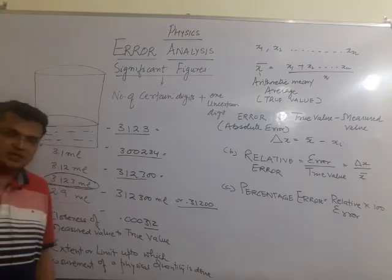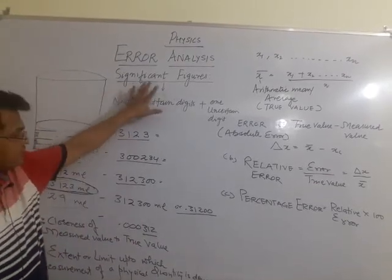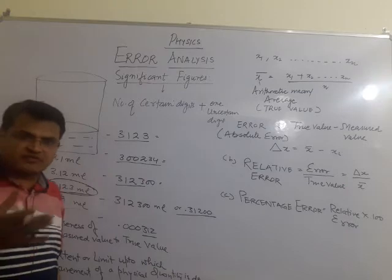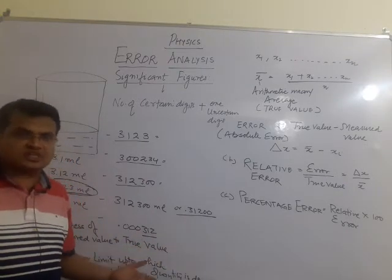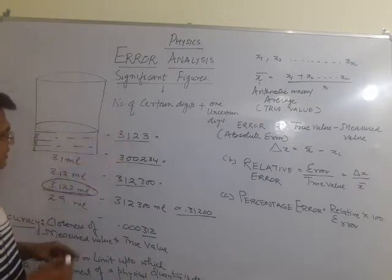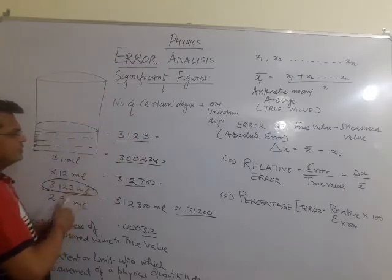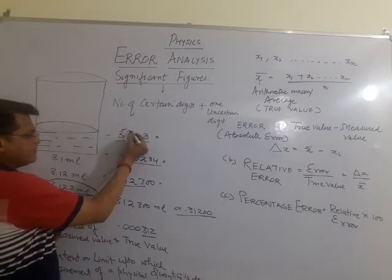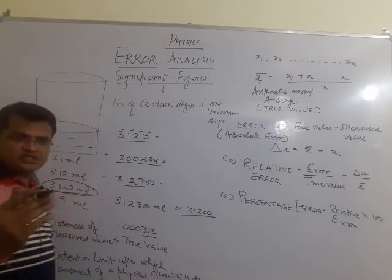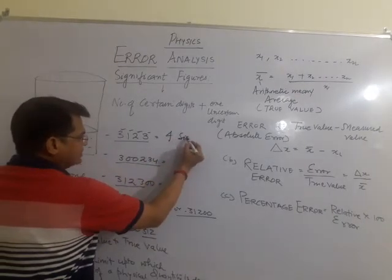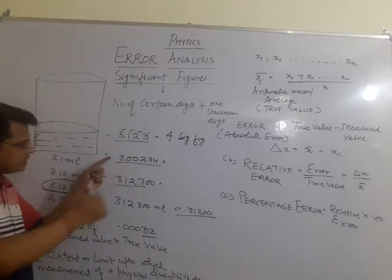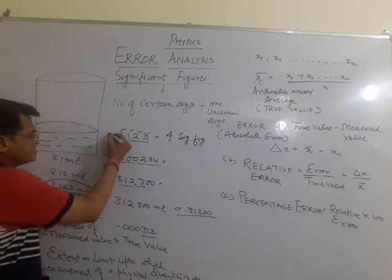So there is a difference between accuracy and precision. Now, for significant figures, we have certain rules and conventions to remember. The first rule is that all non-zero digits are significant.